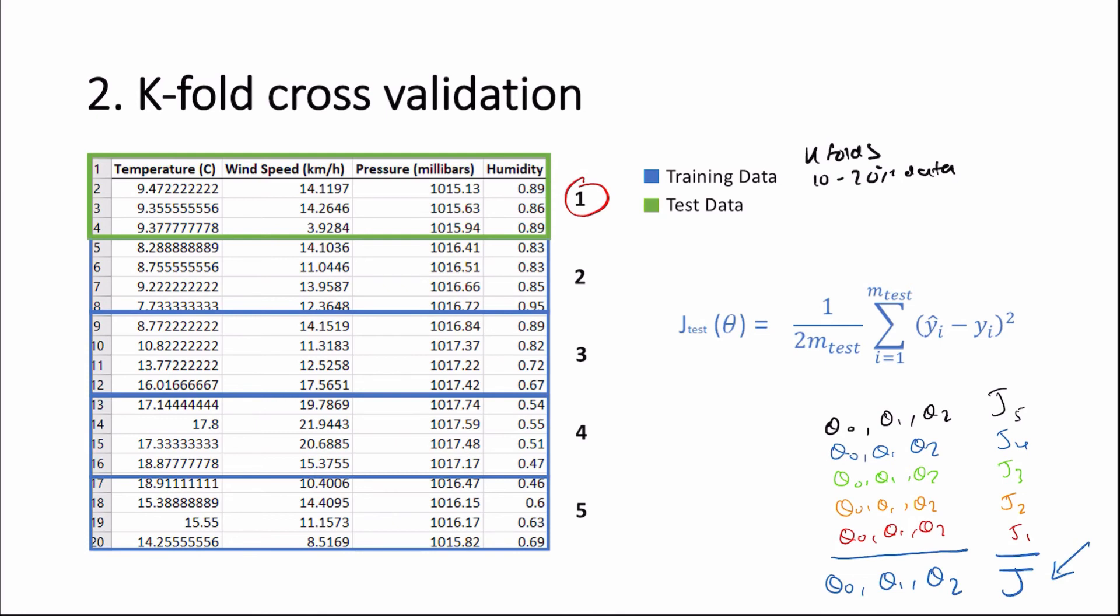So notice here that all of our data has been involved in the construction of our parameters, theta zero, theta one, and theta two. So this may actually lead to a better model than the train test split, even if we were using the exact same model in both the train test split and the k-fold cross-validation, because here all of our data is being used up in the calculation of our parameters, as opposed to just 80% in the train test split.